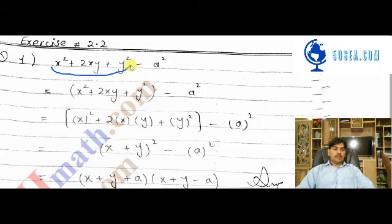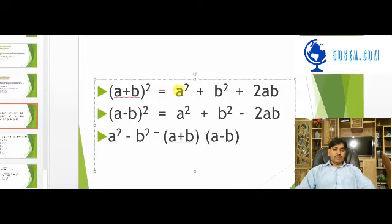You will see that this is direct formula. This is x square plus y square plus 2xy. If you look at this formula, you will see that a square plus b square plus 2ab.